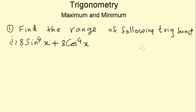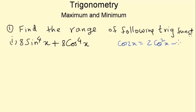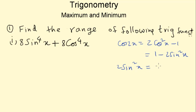What is sin square x or 2 sin square x in terms of cos 2x? We know that cos 2x is equal to either 2 cos square x minus 1, or 1 minus 2 sin square x. From this, you get 2 sin square x as 1 minus cos 2x.